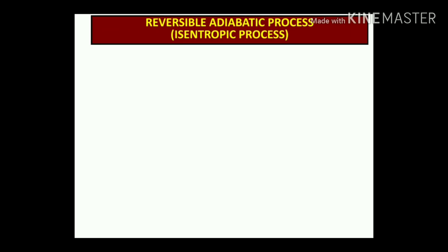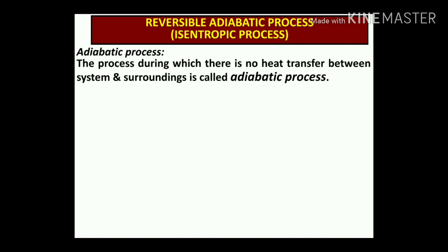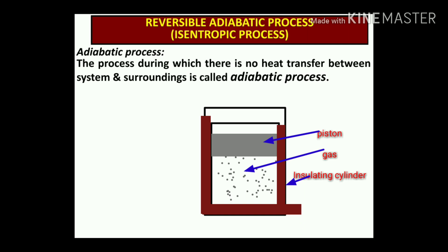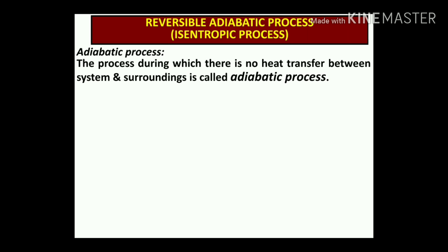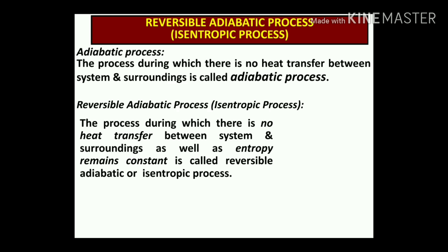In the adiabatic process, there is no heat transfer between the system and surroundings. For example, if a cylinder filled with gas acts as an insulating body, there is no heat transfer from inside the cylinder to the outside surroundings. This is one kind of adiabatic process. The reversible adiabatic process is also called the isentropic process, in which entropy remains constant.